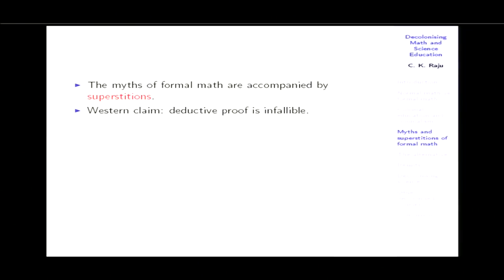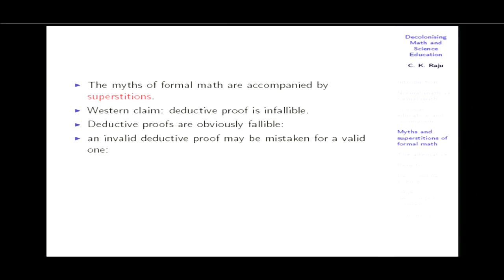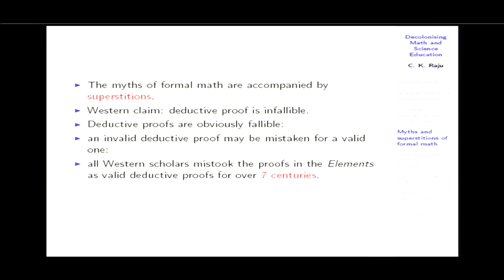The myths are accompanied by superstitions, one of which is that deductive proofs are infallible. That's not true — deductive proofs are obviously fallible. One simple reason: an invalid proof may be accepted as a valid proof. That is exactly what happened in the case of the Elements: it had invalid deductive proofs that were accepted as valid for centuries, from 1125 when it arrived until around 1900 when Bertrand Russell said they were wrong. Not that giving deductive proofs was ever the intention.